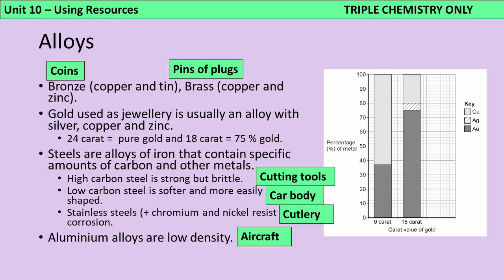9 karat gold is only half as pure, so it's 37.5% gold and 62.5% other metals. You need to know about three kinds of steel: high carbon steel, which is strong but brittle; low carbon steel, which is softer and more easily shaped; and stainless steel containing chromium and nickel, which resists corrosion. This makes stainless steel really useful for making cutlery, because a lot of food has small amounts of acid in it, and you don't want that acid corroding your cutlery.